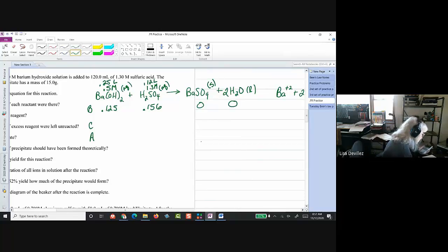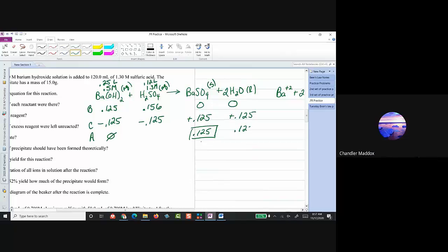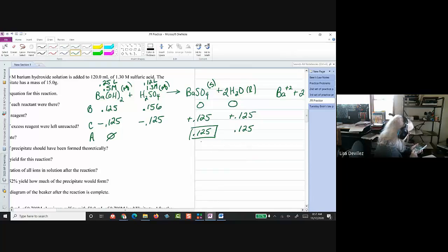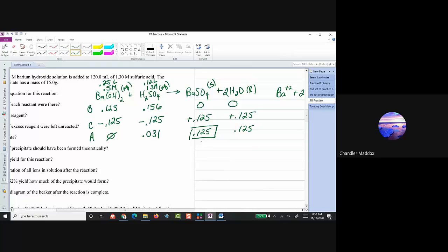Okay. So, these are one-to-one. So, this is our limiting. Minus 0.125 plus 0.125 and plus 0.125. And that's my precipitate. And 0.156 minus 0.125. So, 0.031.